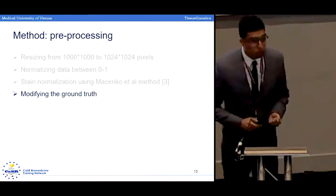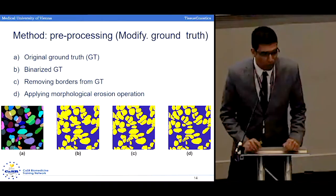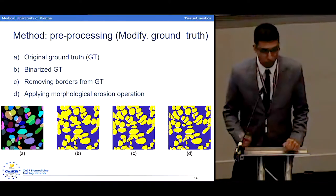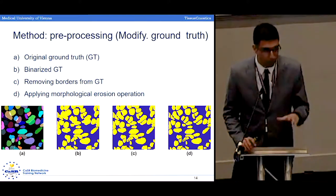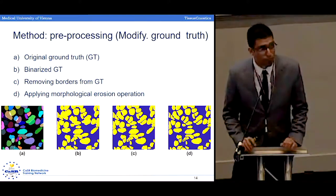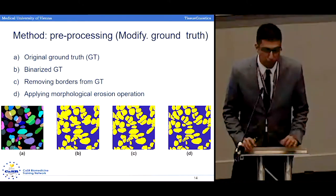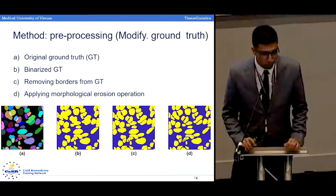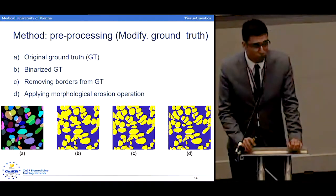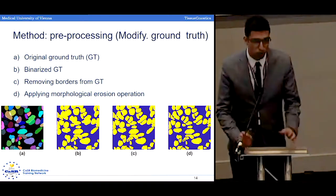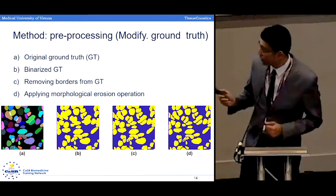Finally, we modified the provided ground truth in four steps. In picture A you can see the provided ground truth. First, we binarize the ground truth, as shown in picture B. Then we remove the touching borders, as shown in picture C. And finally, we apply an erosion morphological operation to have better distinction between touching objects, as shown in picture D.